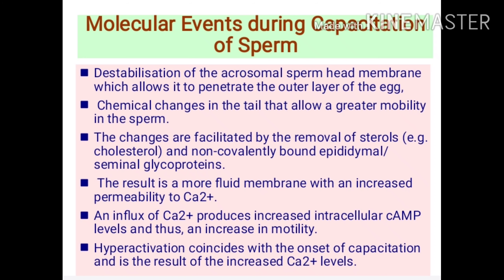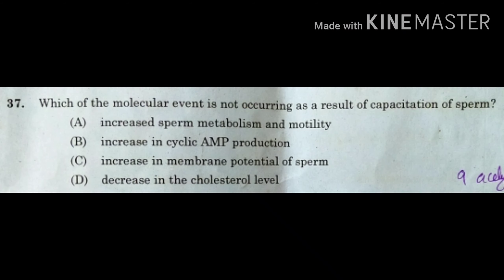Now I think you have got the correct answer. The correct answer is Option C: increase in membrane potential of sperm. The membrane potential of sperm actually becomes reduced during capacitation, which is why the sperm membrane exhibits more permeability. The event NOT occurring during capacitation is Option C — the correct event is decrease in membrane potential of sperm.